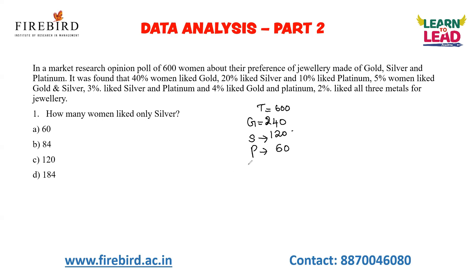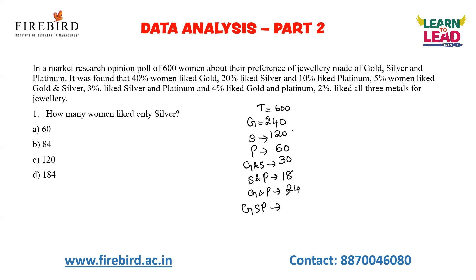5% of women like gold and silver. I know that 10% of 600 is 60, and 5% is half of that, which is 30. And 3% like silver and platinum — 1% of 600 is 6, so 3% is 18. The people who like silver and platinum is 18. And 4% like gold and platinum — 4% of 600 is 24. And 2% like all three, that is gold, silver, and platinum — 2% of 600 is 12.